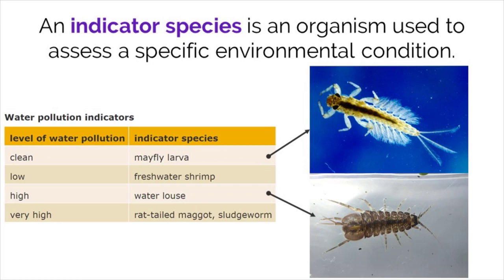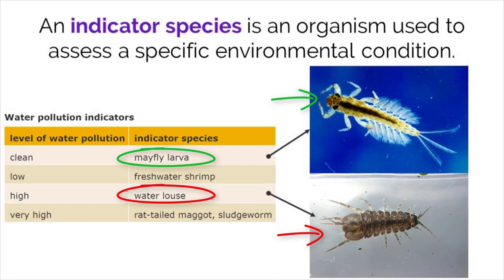Humans can gauge the environmental condition of an ecosystem by using indicator species. An indicator species is an organism that lives in a very specific set of conditions. For example, the mayfly larvae can only live in clean, unpolluted water, whereas other organisms like the water louse can survive in water with high levels of pollution.